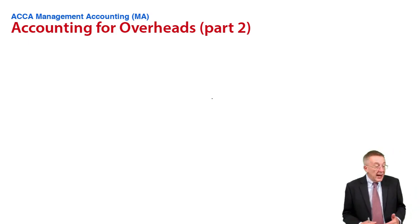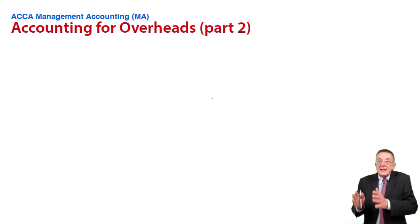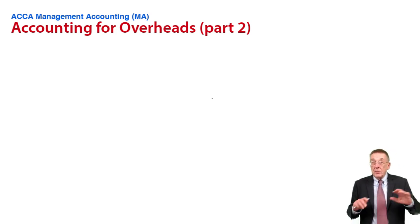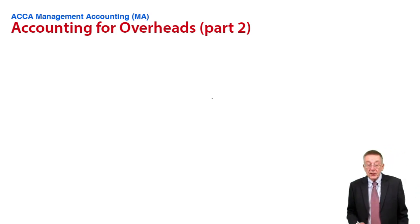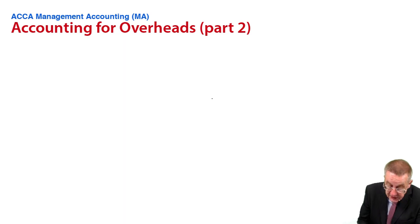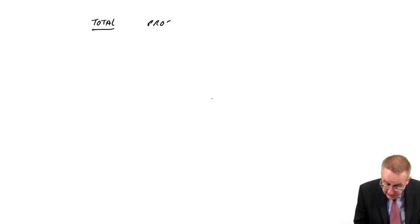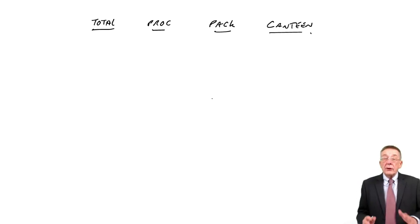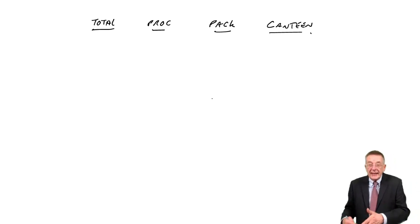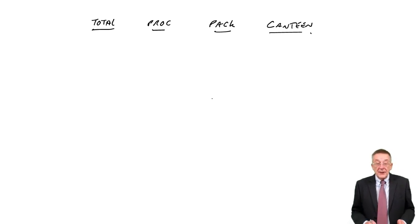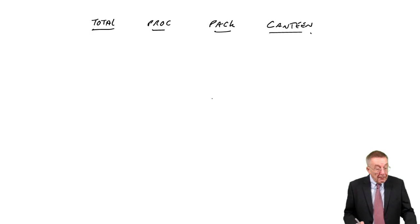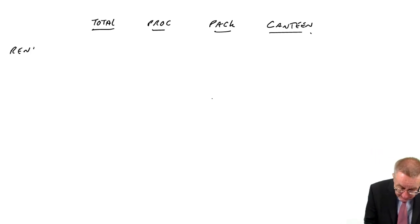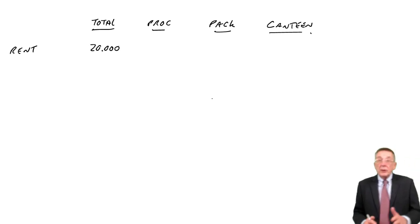We're not actually going to get an absorption rate — we don't have enough information. But this is allocating and apportioning. In example three it was very easy; there were only two costs to deal with. Here it's a bit more involved. So we're going to split the overheads with a column for the total, and split it between the three departments: processing, packing, and canteen. First of all, the factory rent is 20,000.